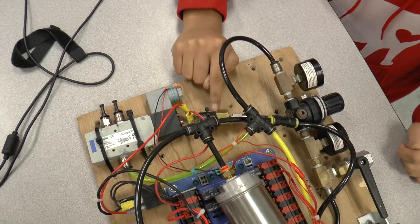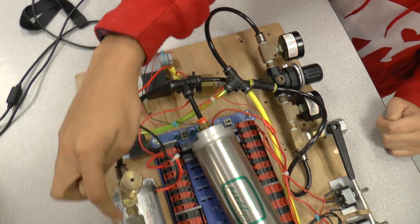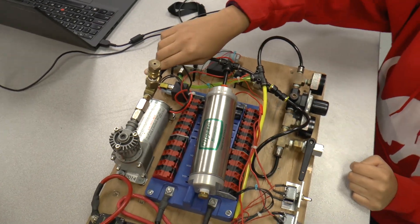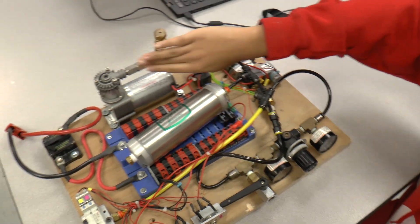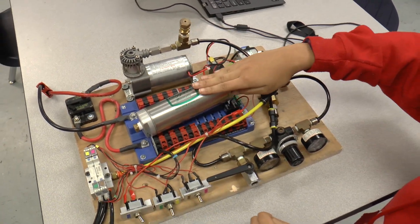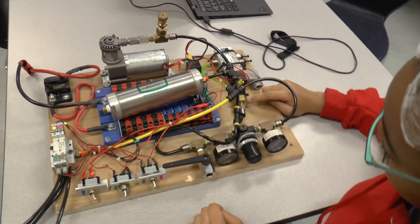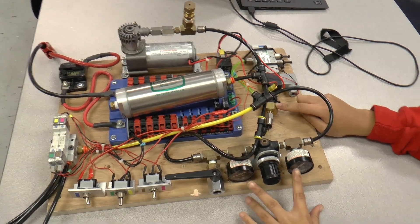Over here is the pressure switch that connects to the compressor. It turns it on and off, and the compressor fills the tank with air. The pressure switch also connects to the pressure gauges.